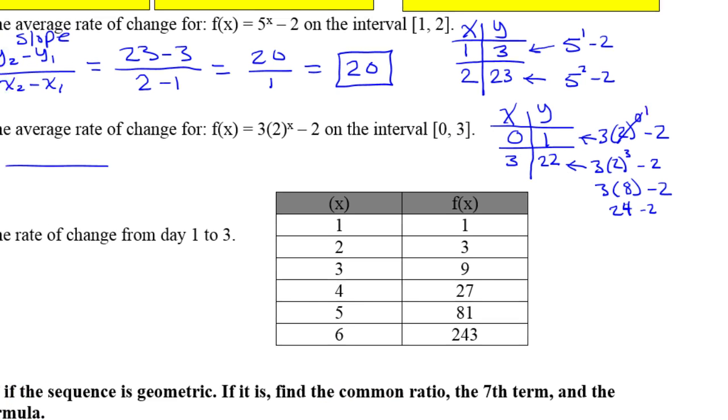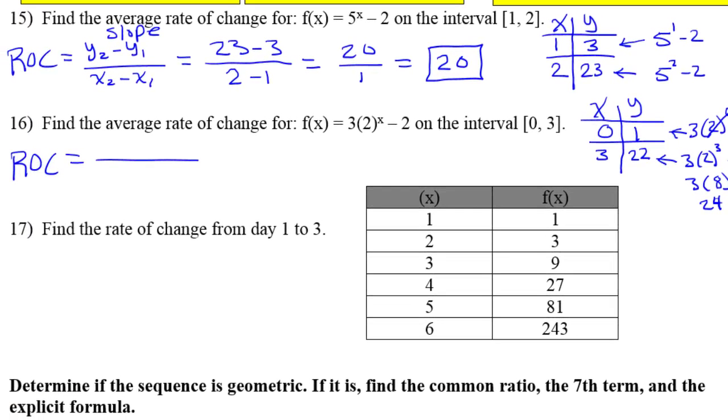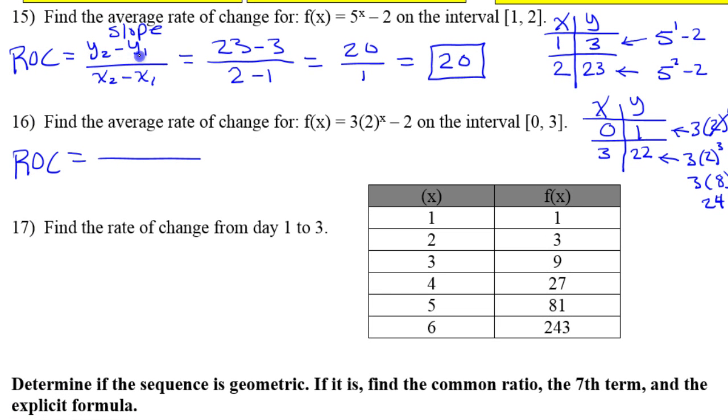Now, so when we do our rate of change, we're just going to end up using the slope formula. So I'm going to do y minus y over x minus x. Y minus y, that's 22 minus 1, over x minus x, 3 minus 0. All right, 22 minus 1 is 21. 3 minus 0 is 3. 21 divided by 3 is 7. So that would be the rate of change right there.